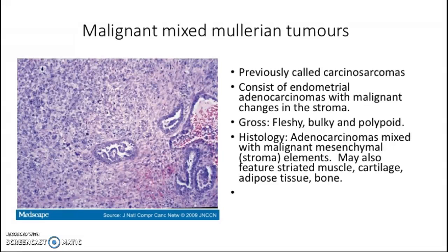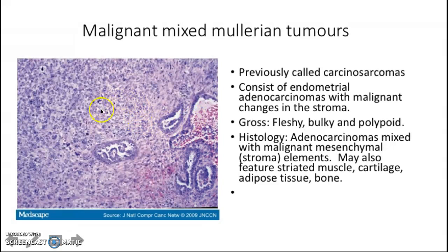Malignant mixed Müllerian tumor is less common but important to know. Previously called carcinosarcoma, it contains both an element of carcinoma — malignant glands — and an element of sarcoma with malignant changes in the stroma. Grossly, it presents as a fleshy, bulky, or polypoidal tumor. Histologically, you see adenocarcinoma with sarcoma or malignant mesenchymal elements, and you can also see striated muscle, cartilage, adipose tissue, or bone.